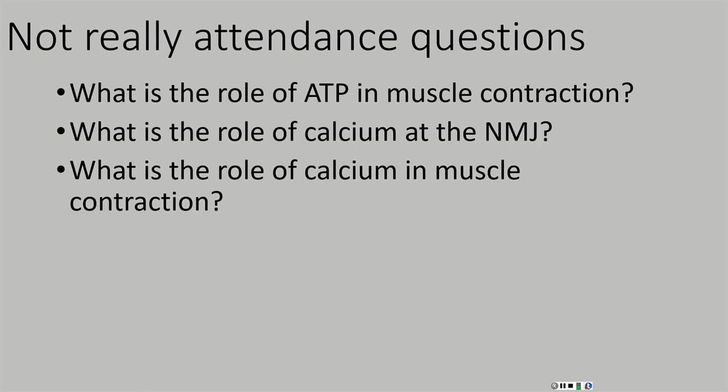What is the role of ATP in muscle contraction? ATP provided the energy needed to break the crossbridge. Next, what is the role of calcium at the neuromuscular junction? This could also have said what is the role of calcium at a synapse — it doesn't have to be a neuromuscular junction synapse; it could be any synapse.